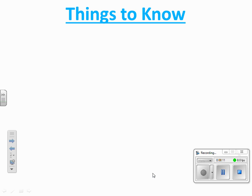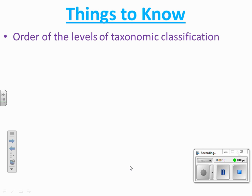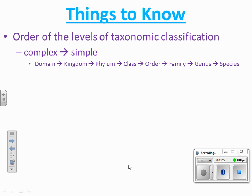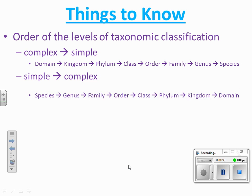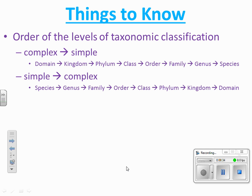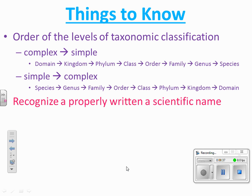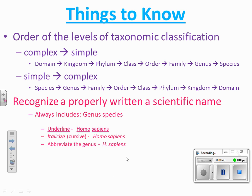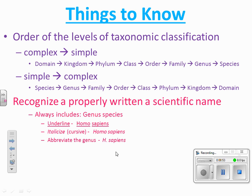To wrap it up: you should know the order of the levels of taxonomic classification. From broadest to most specific: domain, kingdom, phylum, class, order, family, genus, species. From most specific to broadest: species, genus, family, order, class, phylum, kingdom, domain. You should also be able to recognize how to write a scientific name — it always includes the genus and species, the first letter of the genus is capitalized, everything else is lowercase, and you can underline it, italicize it, or abbreviate the genus. Scientific names are important because not everybody in the world speaks English and we need to communicate with everyone about what organisms we're talking about.